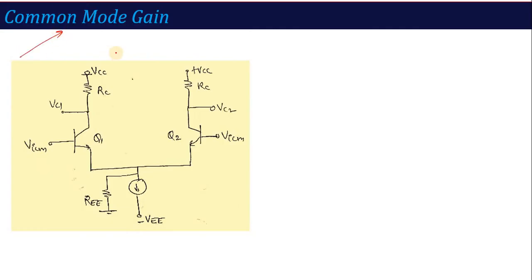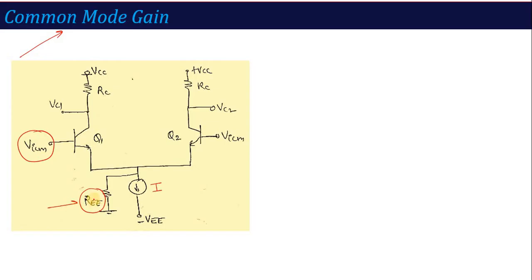For Common Mode Gain, we have already seen that the MOSFET Differential Pair analysis was the same here for BJT Differential Pair. For Common Mode, if I want to calculate the Common Mode Gain, both inputs of the transistor are given the Common Mode Input Voltage, that is called VICM. That is nothing but an interference or a noise signal which is commonly applied to both inputs. The current source is I, and if I represent this I, our output has finite resistance. That is RSS — in MOS Differential Pair — here it is REE.